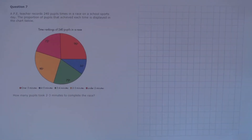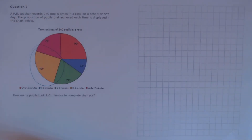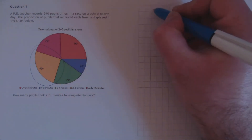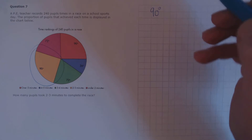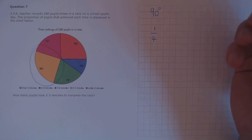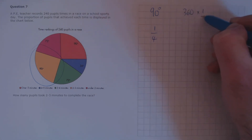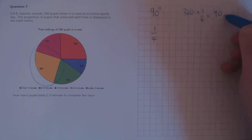Question 7. A PE teacher records 240 pupils' times in a race on a school sports day. The proportion of pupils that achieved each time is displayed in the chart below. How many pupils took two to three minutes to complete the race? We're looking at the yellow segment of the pie — that's 90 degrees. We know 90 degrees is a quarter of the total circle, since 360 times a quarter is 90.